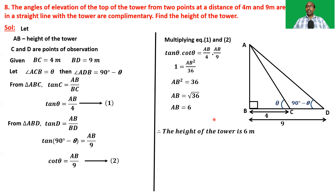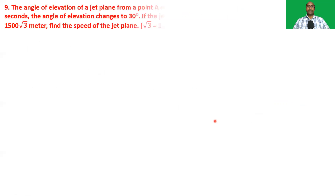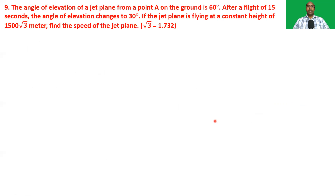So students, the height of the tower is six meters. Now the ninth problem: The angle of elevation of a jet plane from a point A on the ground is 60 degrees. After a flight of 15 seconds, the angle of elevation changes to 30 degrees. If the jet plane is flying at a constant height of 1500√3 meters, find the speed of the jet plane.